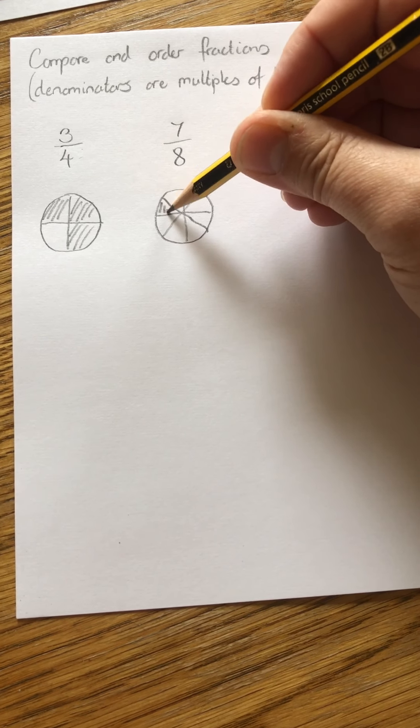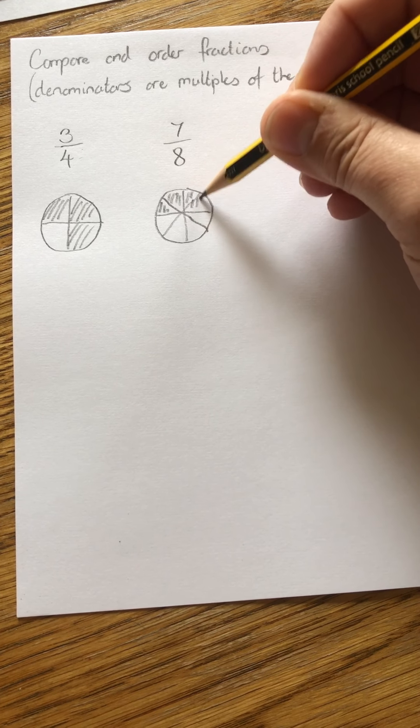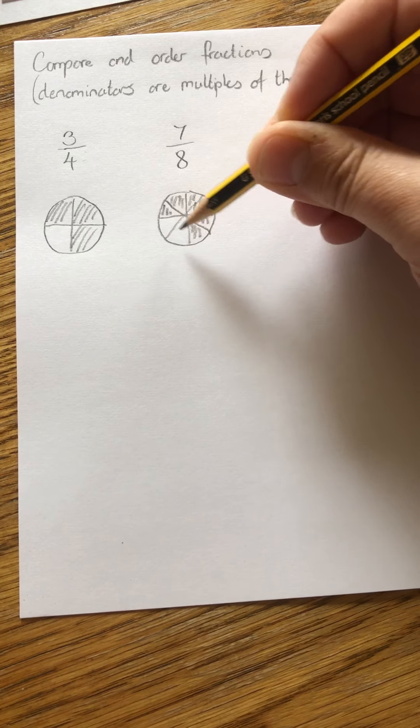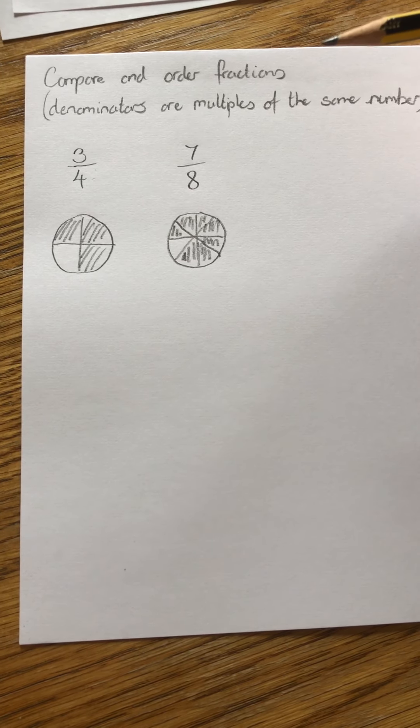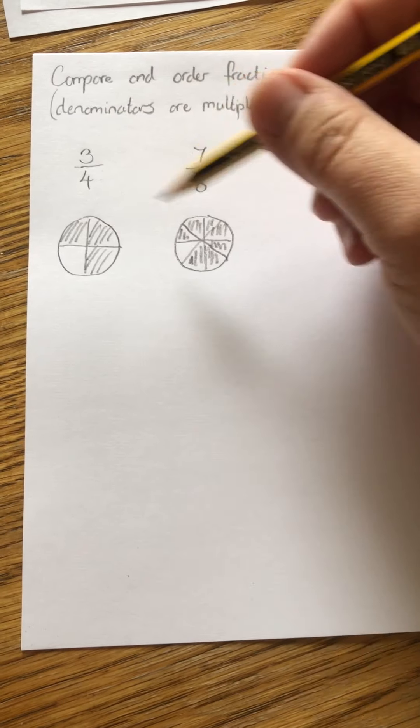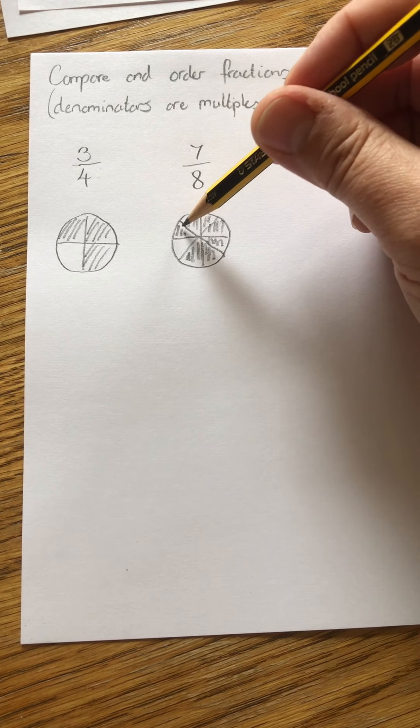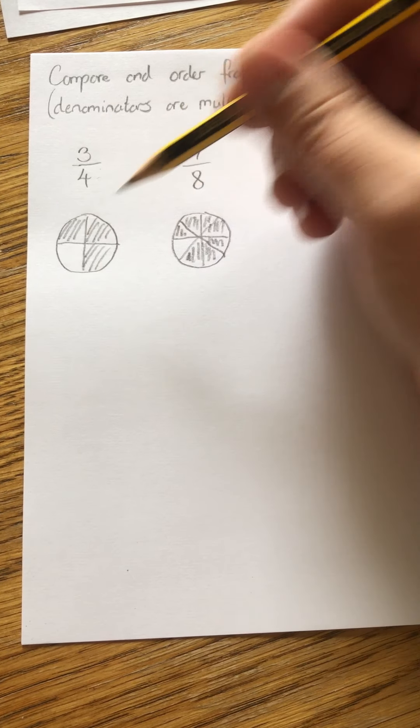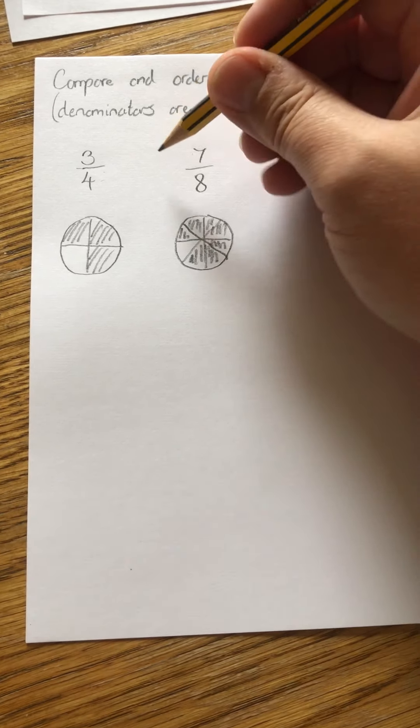I could draw my seven eighths, one, two, three, four, five, six, seven, seven eighths. But by drawing them I can see straight away that this fraction, this has got the most, more than three quarters, this is the bigger fraction.